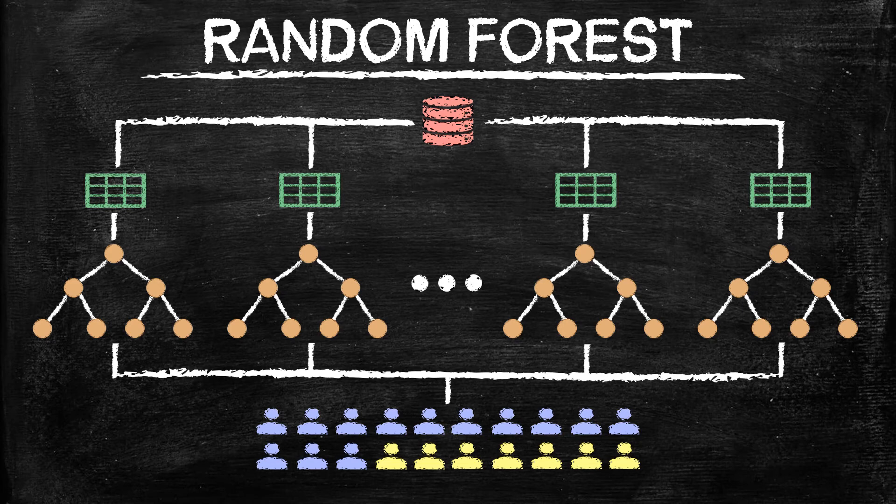So for instance in this case we have the majority vote of the purple class which would be the output for the Random Forest algorithm. Now you can make as many trees as you want within the forest and you can make those decision trees as big or small as you want them to be.